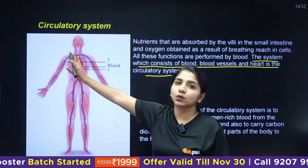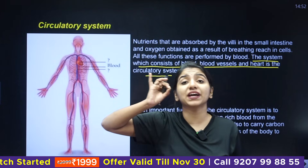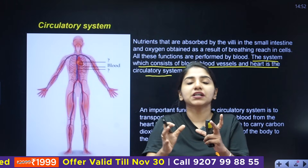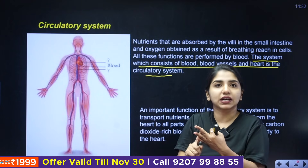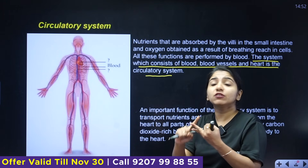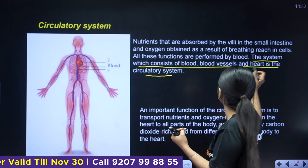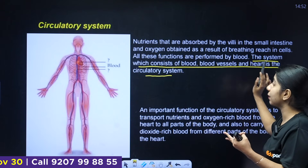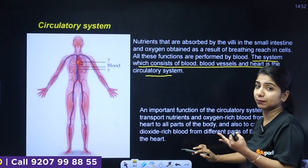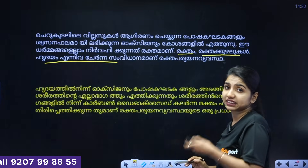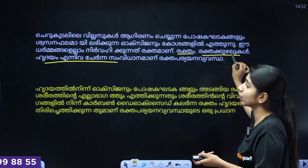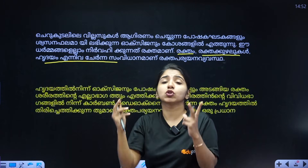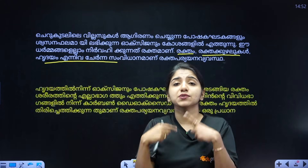First thing you need to know about the circulatory system: this system is called blood circulation. It includes blood, then blood vessels, and that is called the Heart. This is the circulatory system.